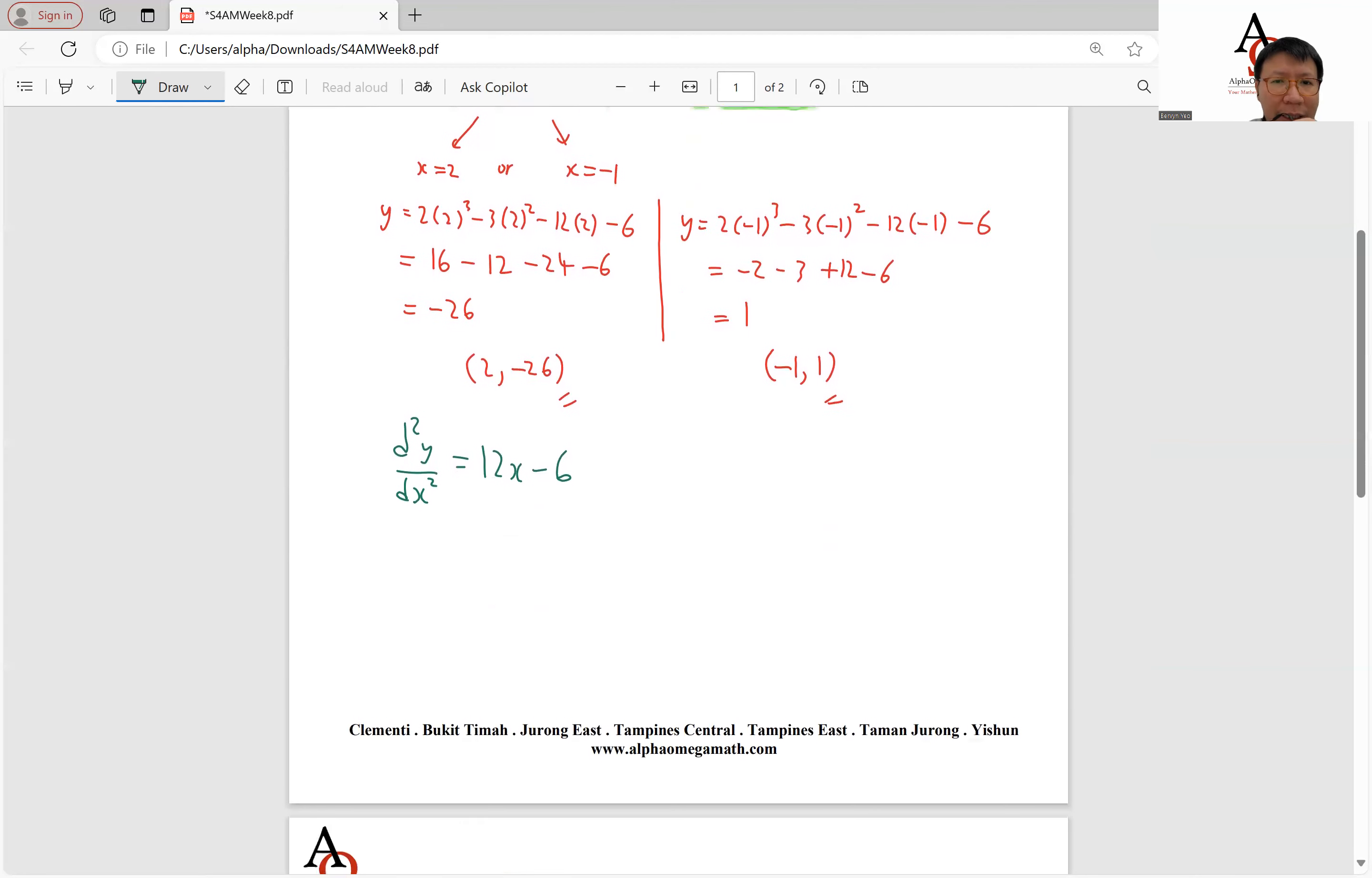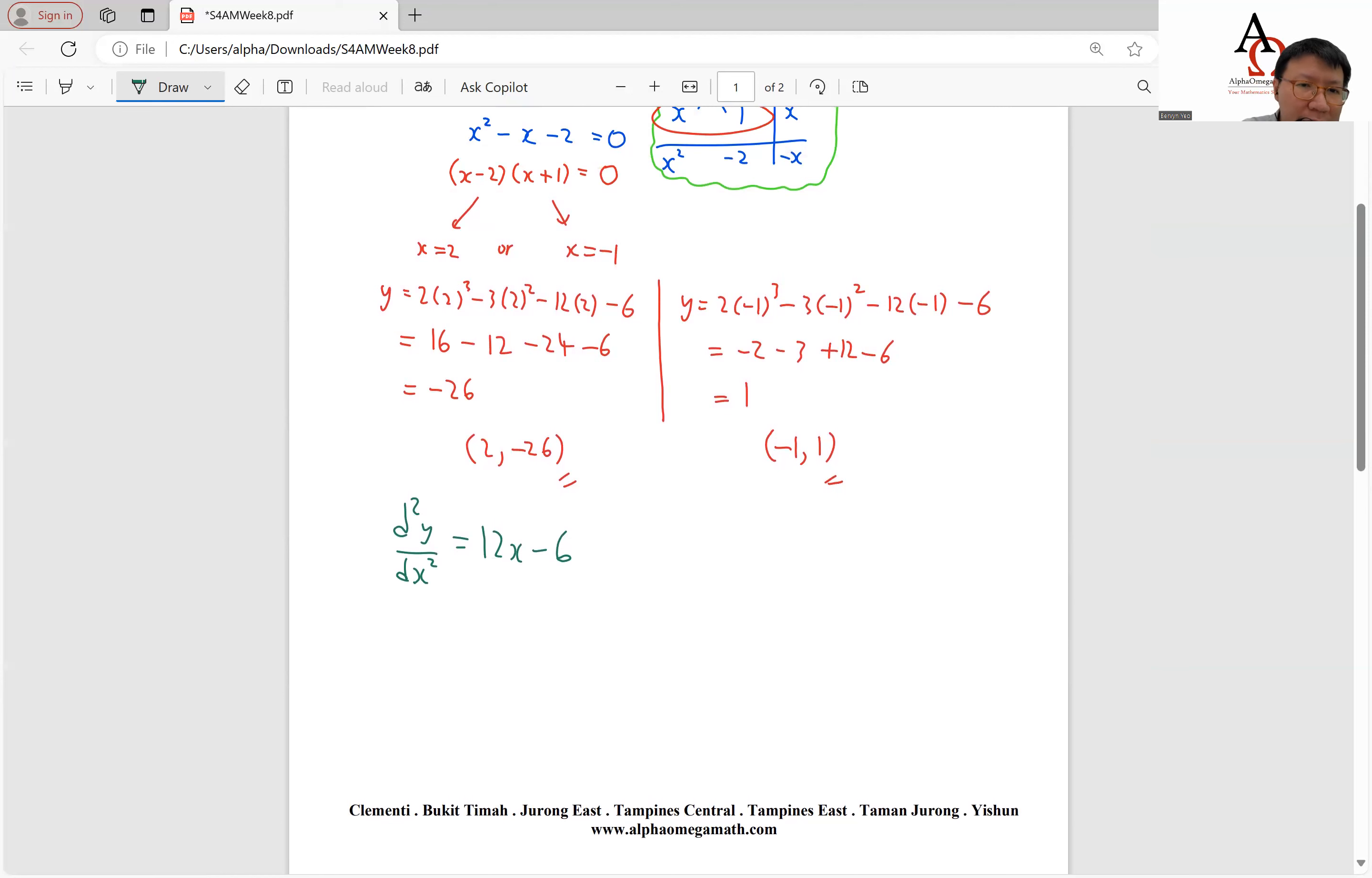So we'll sub in the two values of x. So we can say when x equals to 2, d squared y over dx squared equals to 12 times 2 minus 6. This will give us 18, which is more than 0. So if it's more than 0, we can say that x equals to 2, therefore, x equals to 2 is a minimum point.